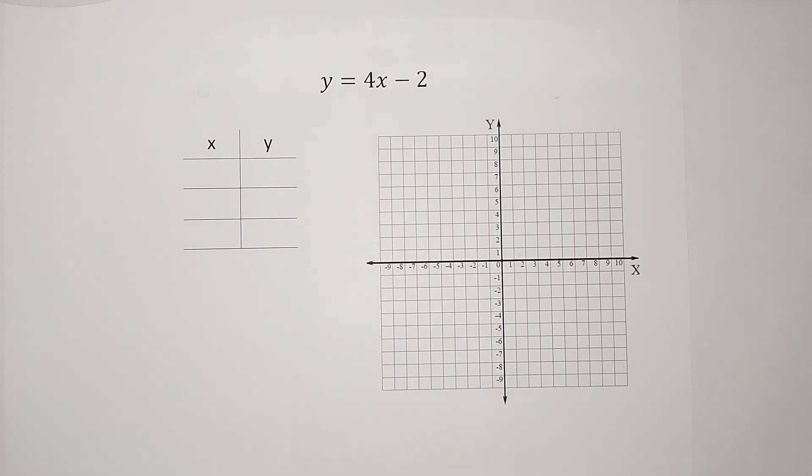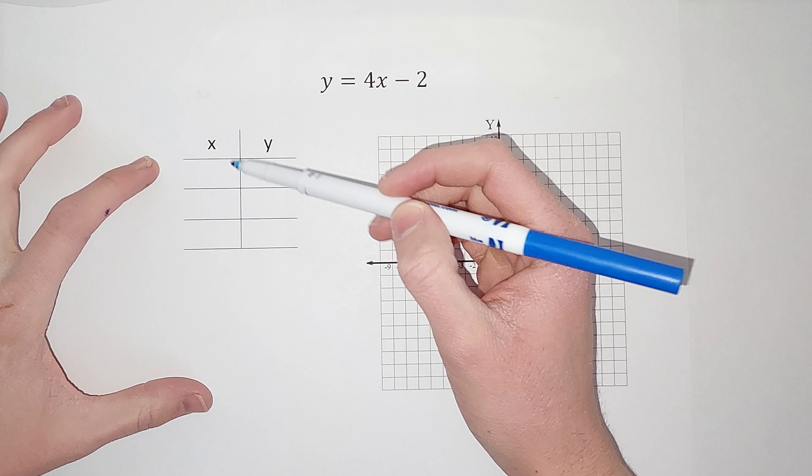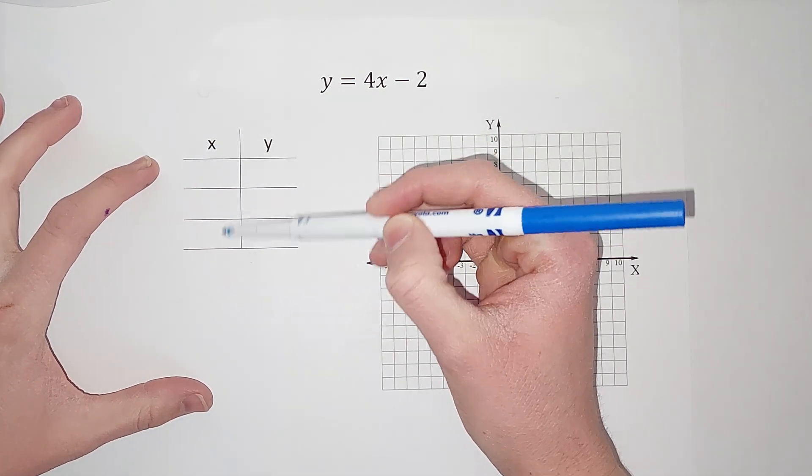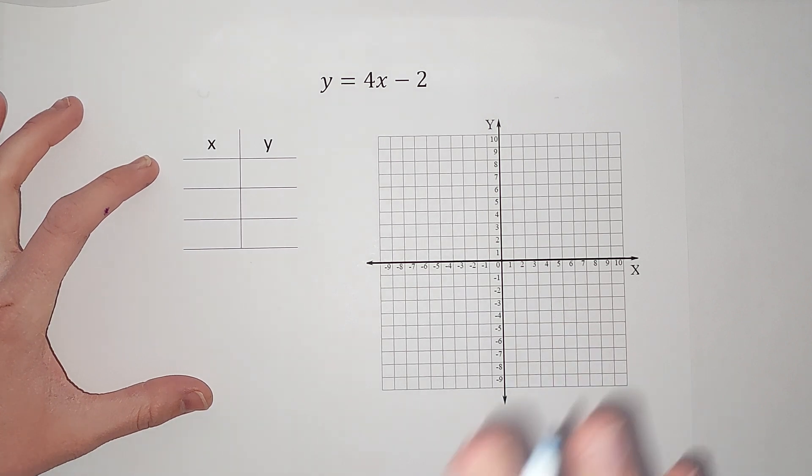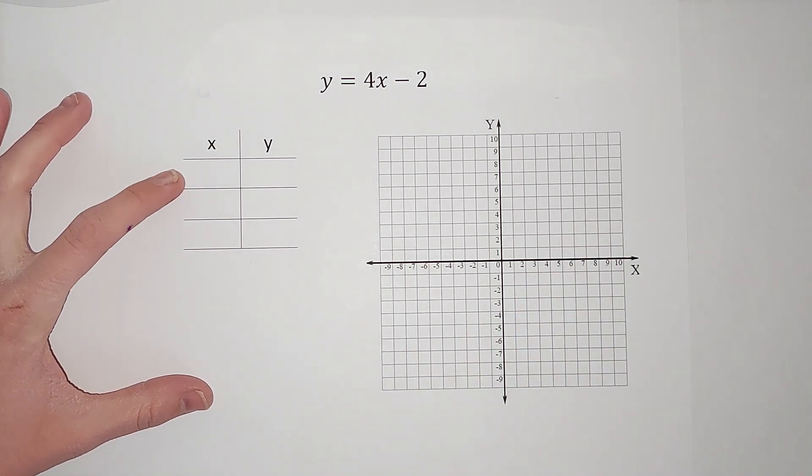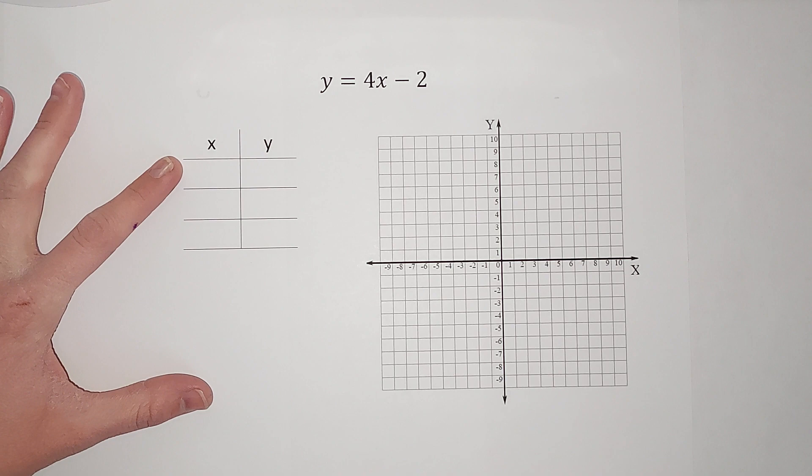So basically, unless your teacher gives you specific points to plug in for x, you can plug in whatever points you want. Now that being said, we want to go easy on ourselves, right? We don't want to plug in 5,232 because I don't want to do that math. So we're going to plug in small numbers.